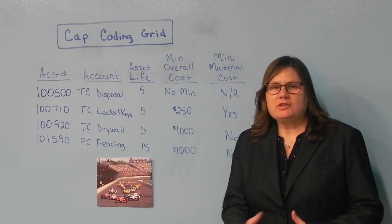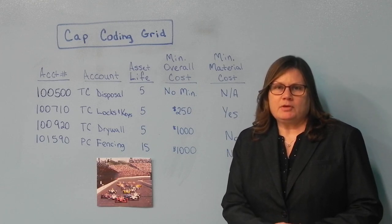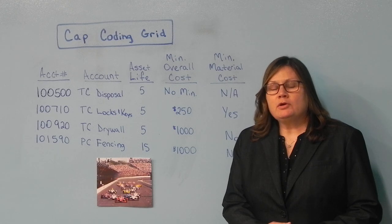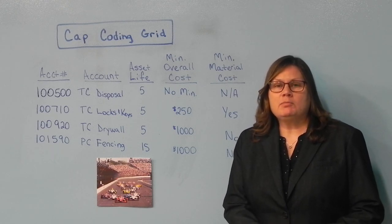I'm here to bring you the next installment of our Capital Spend Speedway series. Today we're going to look at some of the basic capitalization rules, the criteria that need to be met, and we'll look at a couple of examples. Those criteria would be your minimum overall cost, your minimum material cost, and a minimum asset life.